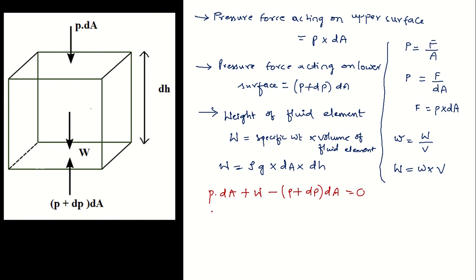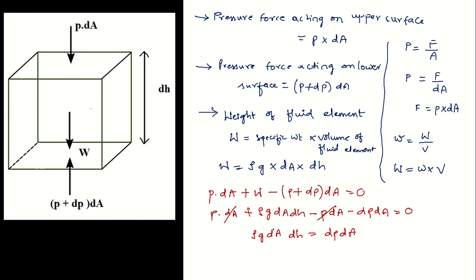Substituting the value of W: p·dA + ρg·dA·dh − p·dA − dp·dA = 0. The p·dA terms cancel out, leaving ρg·dA·dh = dp·dA. The dA terms cancel, giving ρg·dh = dp. Therefore dp/dh = ρg, which equals the specific weight w. This is our hydrostatic law.